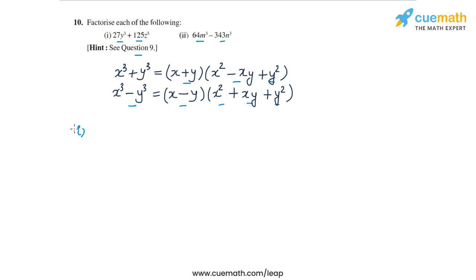Let's do the first part. We have 27y³ + 125z³. This is equal to (3y)³ + (5z)³.